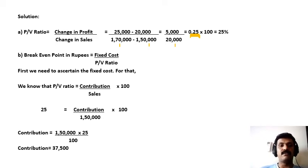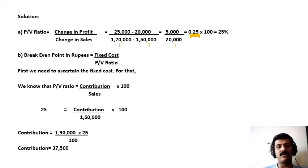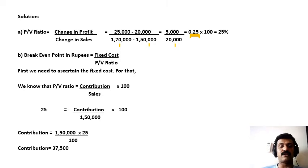Next, we are asked to find out the breakeven point in rupees. The formula for the calculation of that is fixed cost divided by PV ratio. First we need to ascertain the fixed cost because it is not given in the problem. We know the PV ratio, so we can use the alternative formula: PV ratio is equal to contribution divided by sales, multiplied by 100.